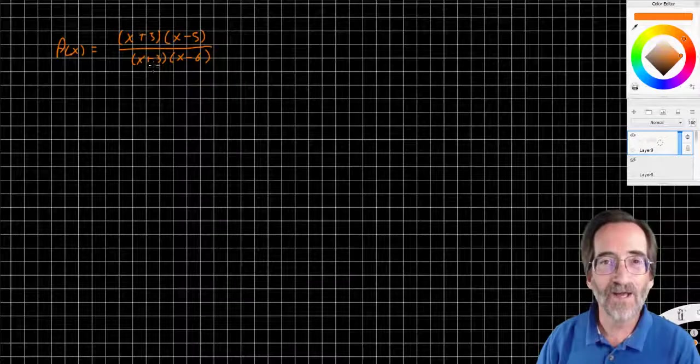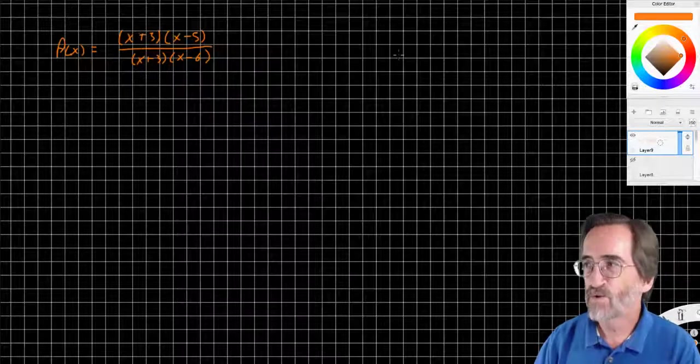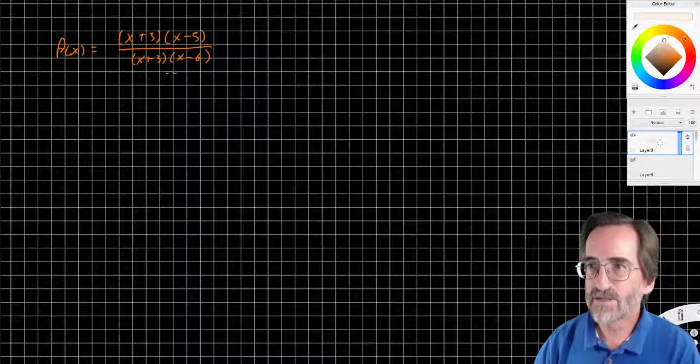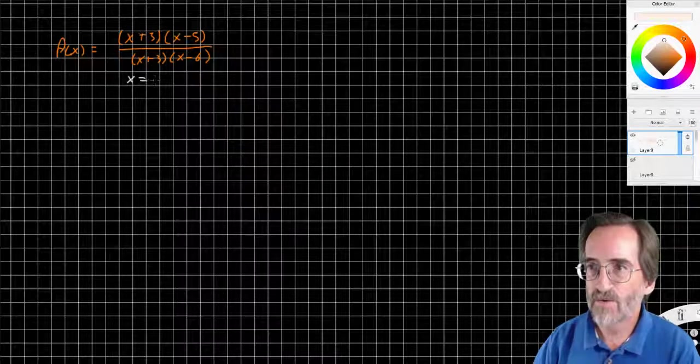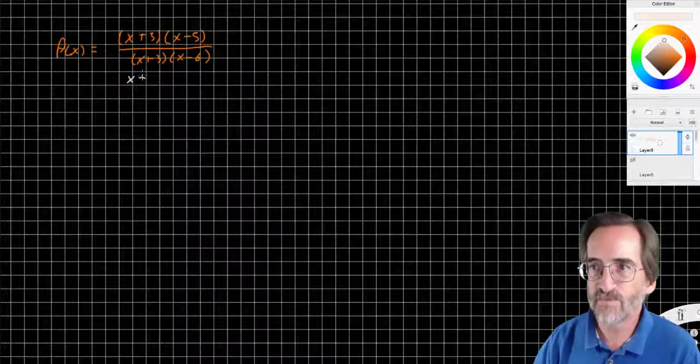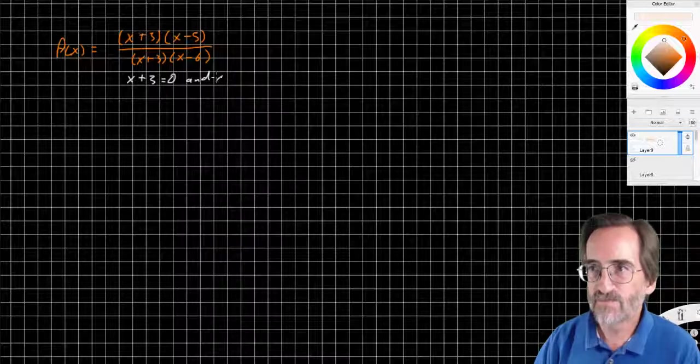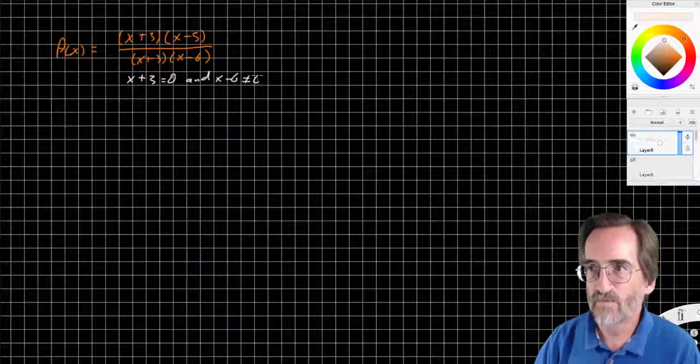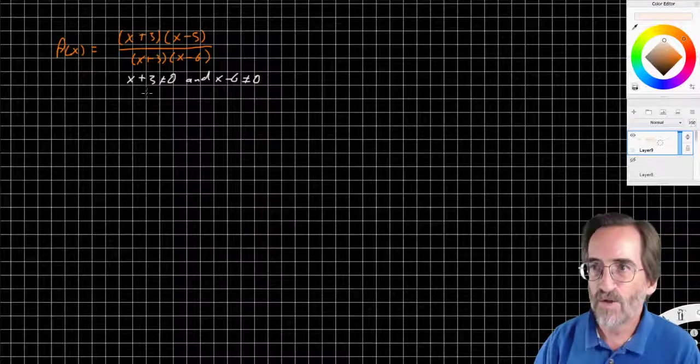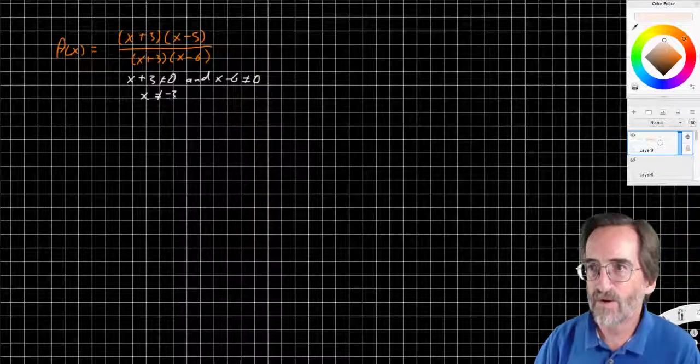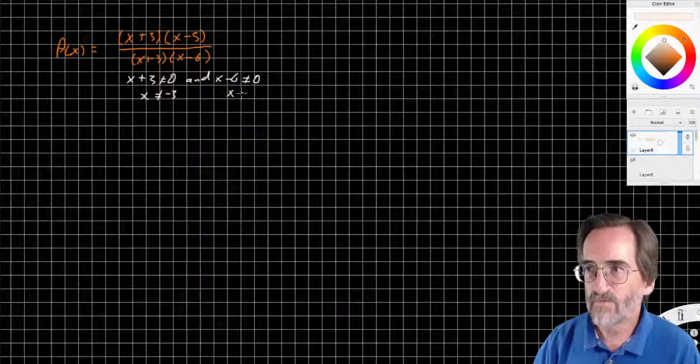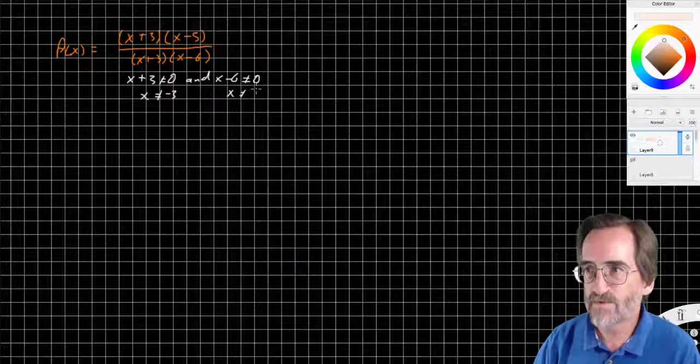Namely because we can't divide by 0. So we know automatically that x cannot equal negative 3, because x+3 can't be 0, and x-6 can't be 0. So x cannot be negative 3, and x cannot be positive 6.